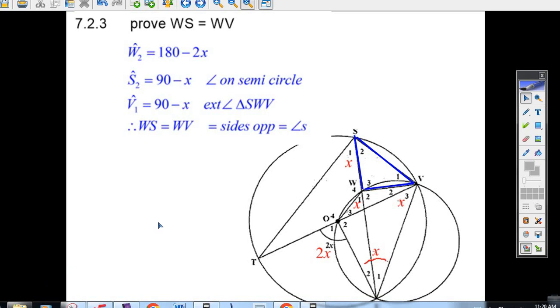Okay, the last part of 7.2 here, the geometry problem. They ask us to prove that WS, this little piece here, this length has to be equal to WV.